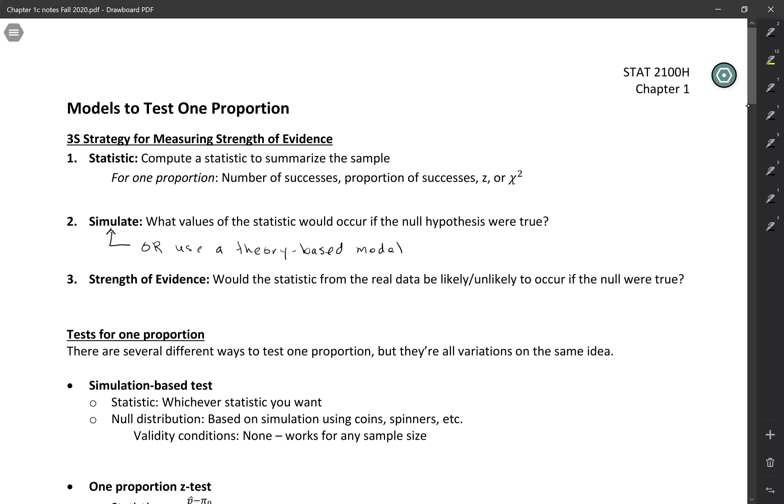The third step is strength of evidence. This is basically comparing your statistic to your simulated distribution or your theory-based distribution to ask, would the statistic from the real data be likely or unlikely to occur if the null hypothesis were actually true?